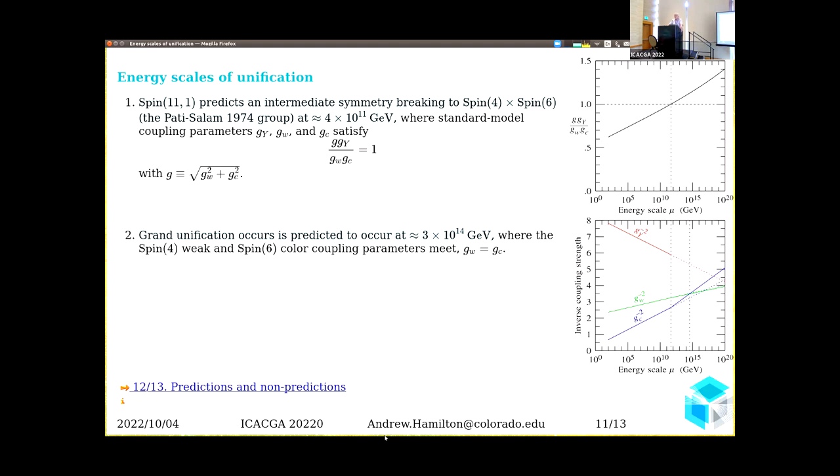This is a very specific model. There are basically almost no free parameters. Among other things, you can see what additional groups—before Spin(11,1), the standard model group unifies to—and it turns out that between Spin(11,1) and the standard model, there is a single possible group, which is the Pati-Salam group: Spin(4) × Spin(6). It unifies where this particular combination of coupling parameters is equal to one, and that turns out from the running of the coupling parameters to be about 4×10^11 GeV. That's simply not negotiable. Grand unification occurs where, after that first unification, the weak and color groups unify, and that happens at 3×10^14 GeV. You don't need supersymmetry. You don't need to fine-tune the three coupling parameters; they automatically unify, first one and then the other one.